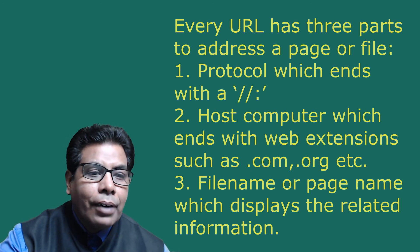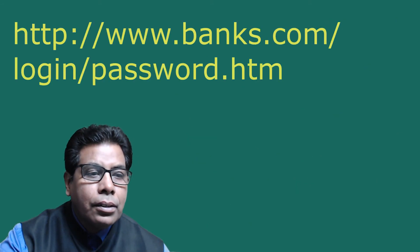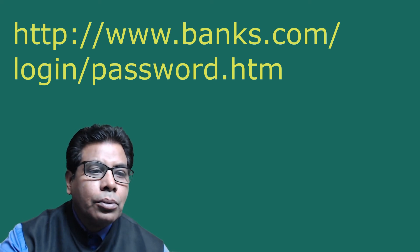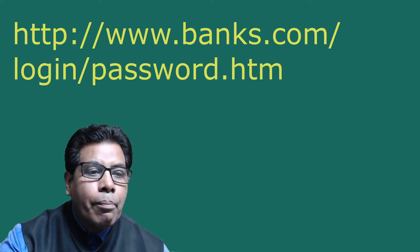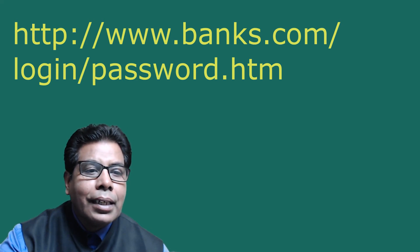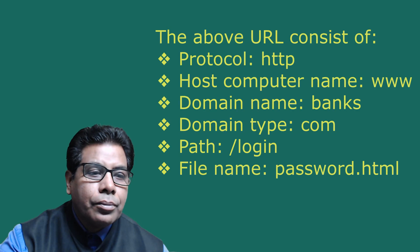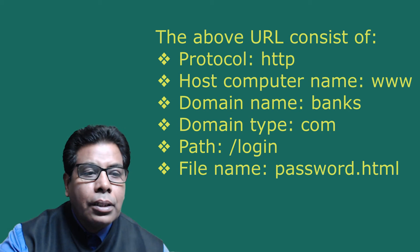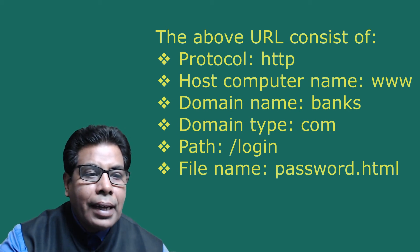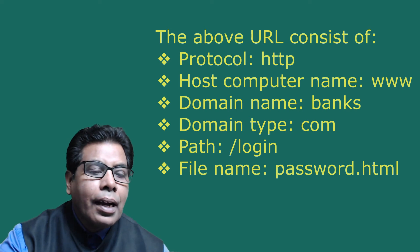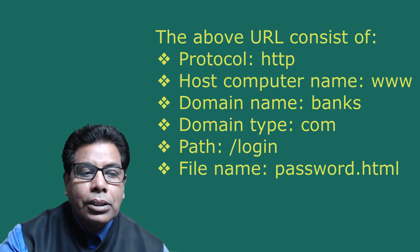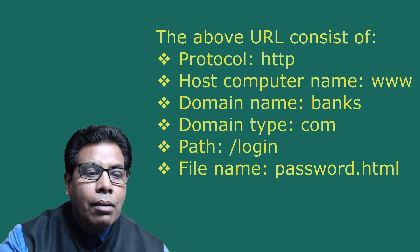The third part is the file name or page name which displays the related information. For example: http is the protocol, then colon double slash and www.banks.com is the site address, and then login/password.http. A URL consists of protocol (http), host computer name (www), domain name (banks), domain type (com), path (class/login), and file name (password.htm).